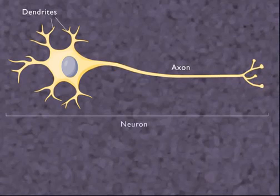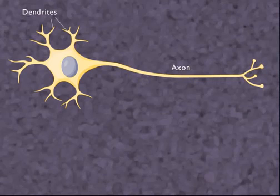Voltage-gated channels open and close in response to an electrical voltage, so they are affected by changes in electrical charge around them.